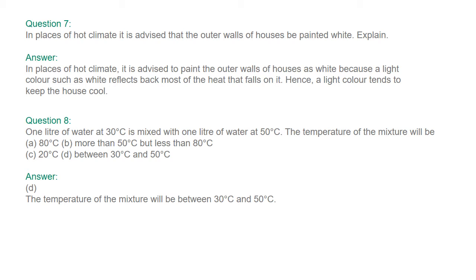Question number eight: one liter of water at 30°C is mixed with one liter of water at 50°C. The temperature of the mixture will be: (a) 80°C, (b) more than 50°C but less than 80°C, (c) 20°C, (d) between 30°C and 50°C. The answer is D — the temperature of the mixture will be between 30°C and 50°C.